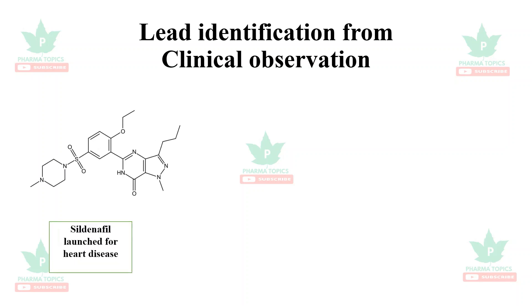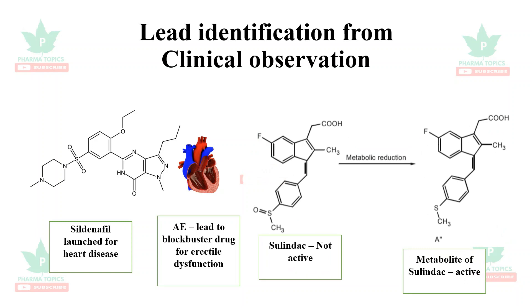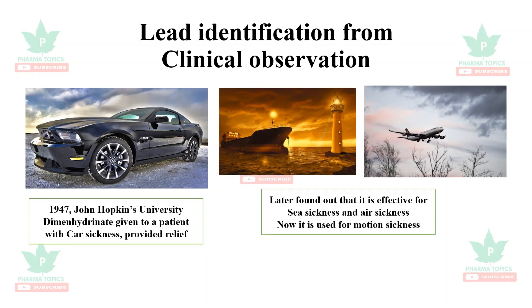Many lead molecules are identified through clinical observation. Sildenafil was first launched for heart disease, but its adverse effect of penile erection led to it becoming a blockbuster drug for erectile dysfunction due to its vasodilatory activity. Sulindac was not an active drug, but metabolism converted it to an active anti-inflammatory drug. In 1947, Johns Hopkins University tested dimenhydrinate on a patient with car sickness; it provided relief and was later found effective for sea sickness, air sickness, and motion sickness.